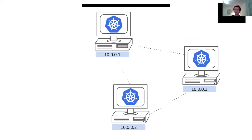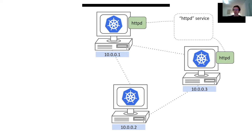So let's start with the basics. First of all, Kubernetes is a distributed scheduler of pods, which are running applications. Pods can be grouped into so-called services, which can be accessed through Kubernetes load balancing mechanisms. Each Kubernetes node acts as a load balancer, meaning that the service can be accessed through any of them.